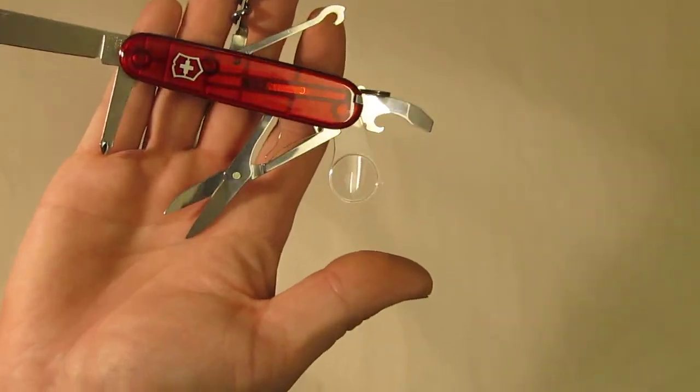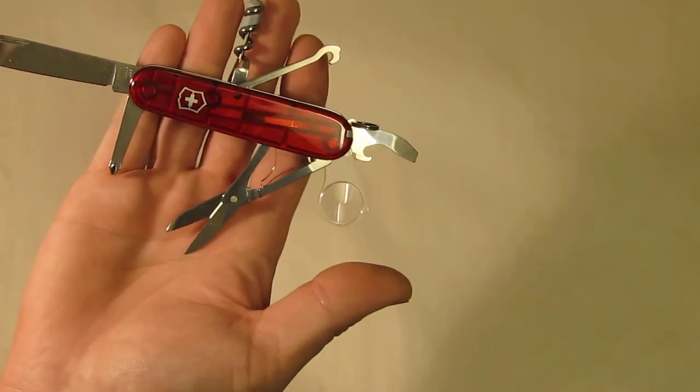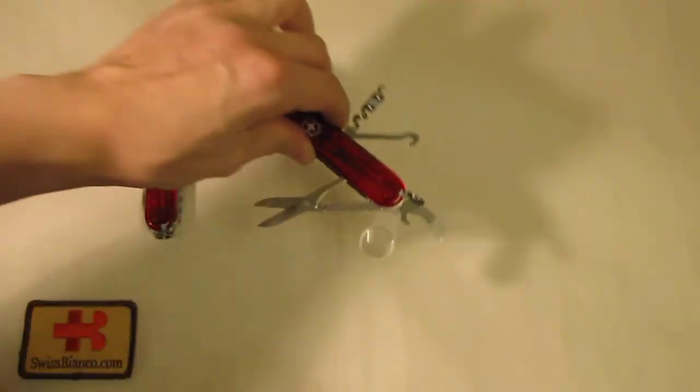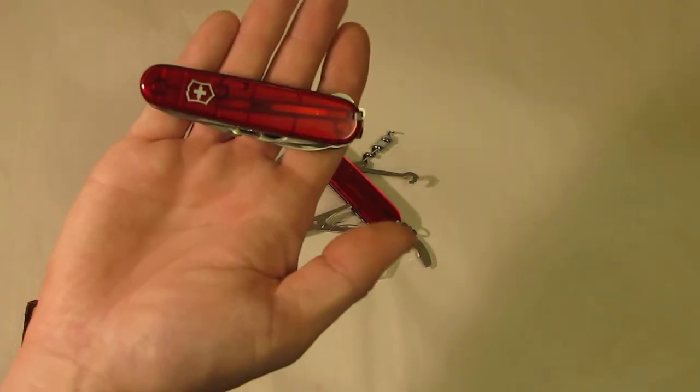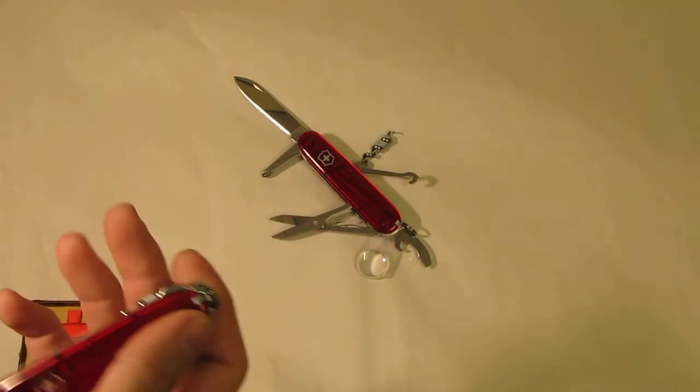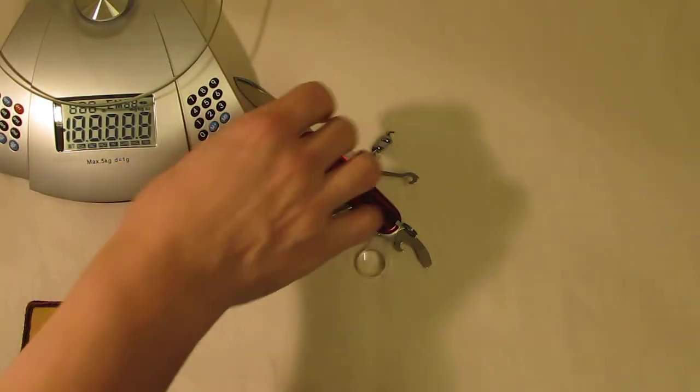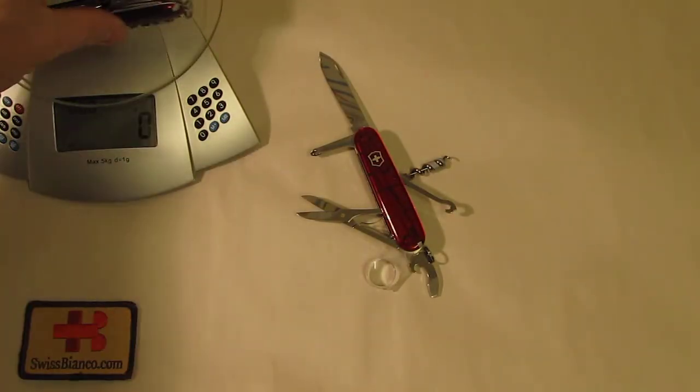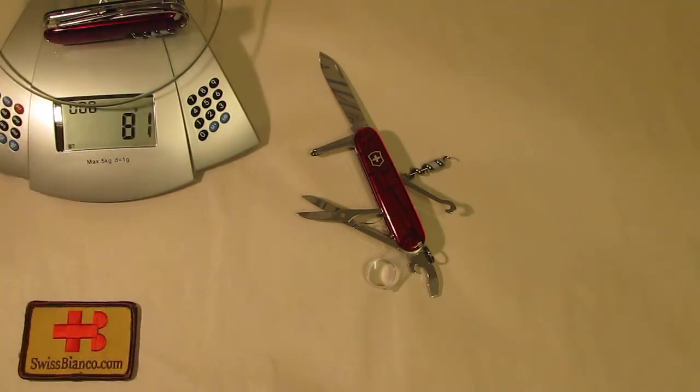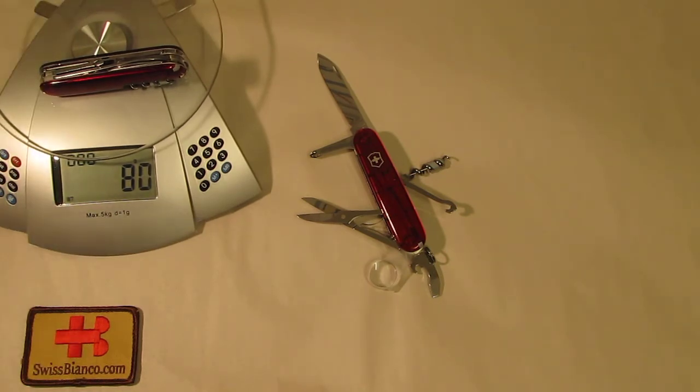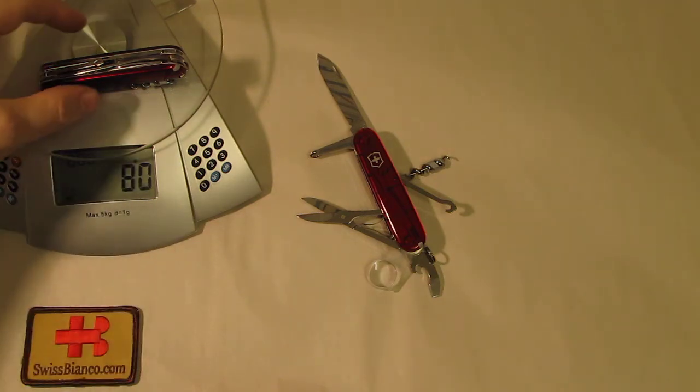And of course the toothpick and the tweezers, that's standard. And on this run we opted for the nice ruby red translucent scales. The knife is relatively compact with its three layers. The weight is not that much either. I got me a new scale because many people did ask about the weight of different Swiss Army knives. So we can now add this feature too. It's 80 grams in this configuration.